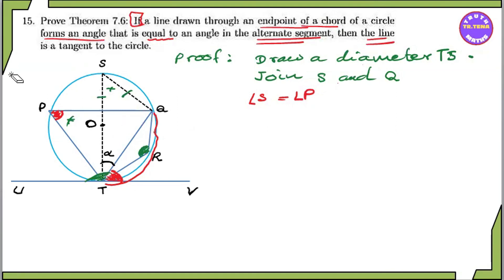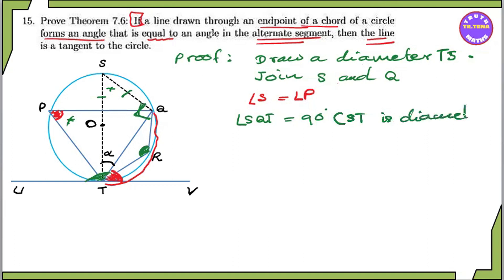Let's look at angle SQT. Angle SQT is equal to 90 degrees. Now, ST is the diameter. In triangle TQS, that is triangle SQT, the diameter of the triangle gives us 90 degrees.